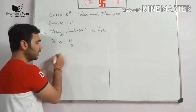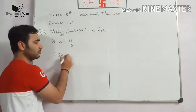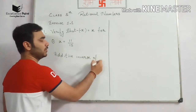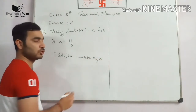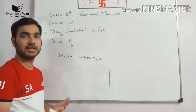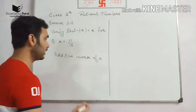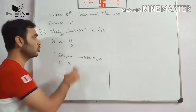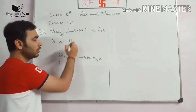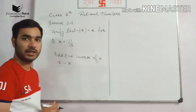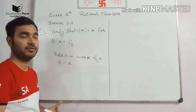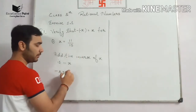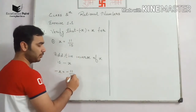The additive inverse of x will be minus of x. So if x is equal to 11 upon 15, then minus of x will be equal to minus 11 upon 15.